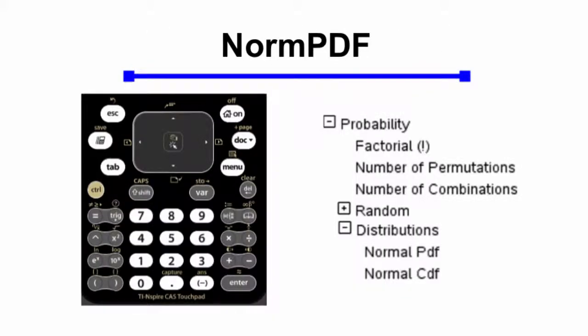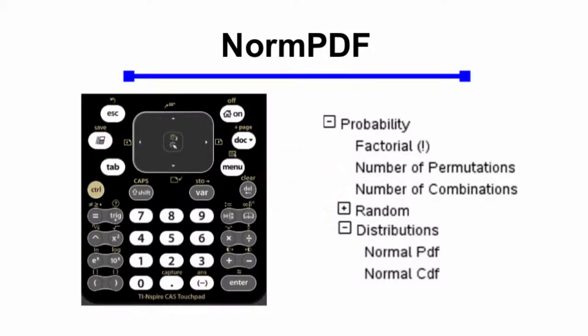Norm pdf — what does it do and where do you find it? You'll find it in the catalog, which is the button that has the open book picture on it. Look under probability, and then look under distributions, and you'll find norm pdf and norm cdf there.